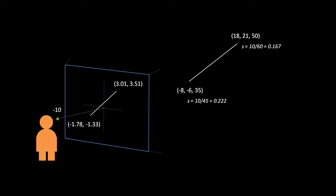We get the X and Y coordinates on the viewplane by multiplying our 3D X and Y by their scaling factor, so we get negative 1.78, negative 1.33, and 3.01, 3.51. If we now want to find the 3D coordinate that corresponds to a point along the line in the viewplane, we start by finding the alpha of that point between the two adjusted endpoints, in this case 0.27.